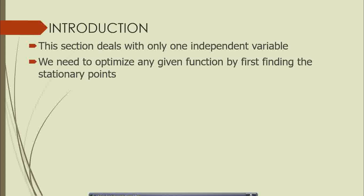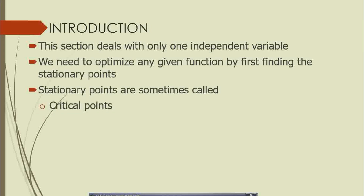Stationary points are points of rest — the point where the slope of a function is equal to zero. Once we find these stationary points, we will be able to categorize each of them. Stationary points may also be called critical points, turning points, or extrema. Any of these names can be used to refer to stationary points, so ensure you understand they all refer to the same concept.